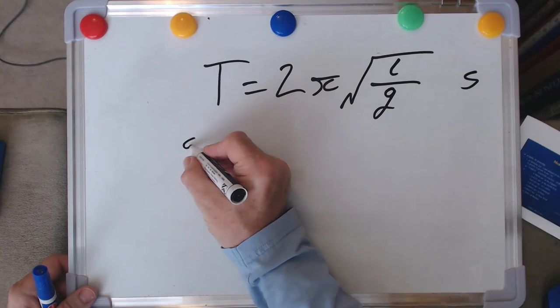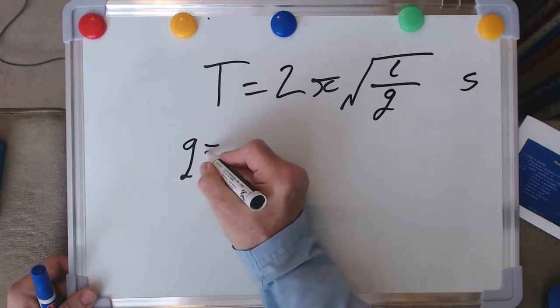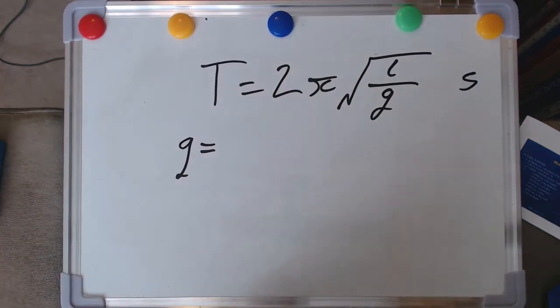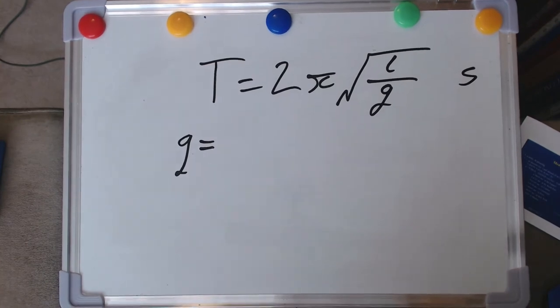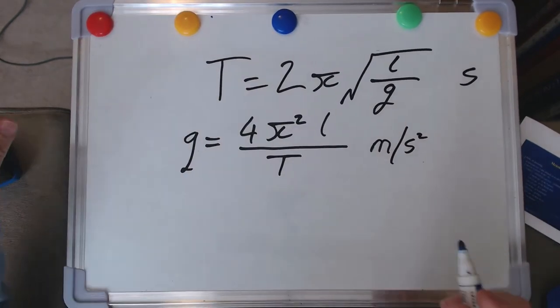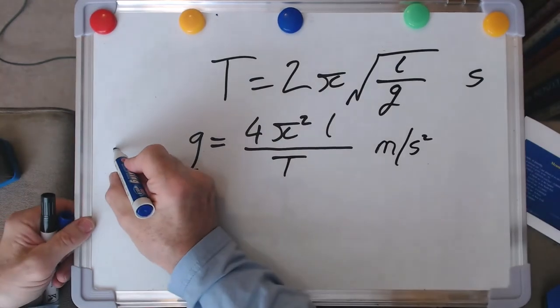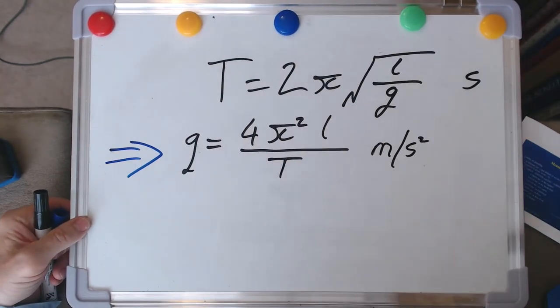And I want to rearrange it so that I've got gravitational acceleration over here on the left hand side. So if I rearrange this equation, I actually end up with this.